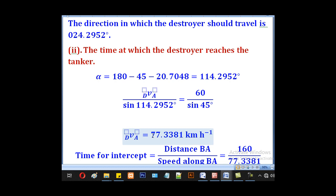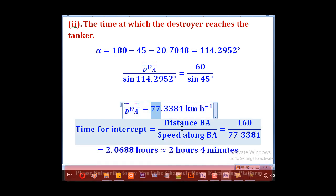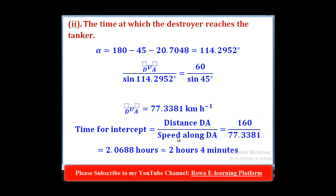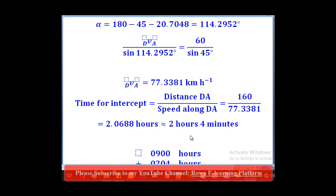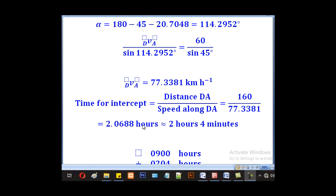So we shall say relative velocity divided by sine that angle alpha equals 60 divided by sine 45. So in that case, we shall get our relative velocity as 77.3381 km per hour. Therefore, the time will equal that distance DA divided by the speed along DA. So it will be 160 divided by 77.3381.